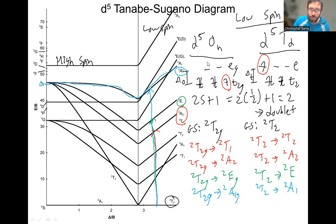We don't have any more doublets, so we don't have any more spin allowed transitions. For both D5 octahedral and D5 tetrahedral complexes that are low spin, remember we're talking about low spin complexes here, you are expecting to have one, two, three, four main peaks.